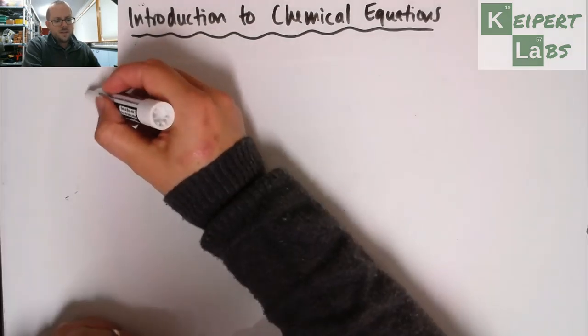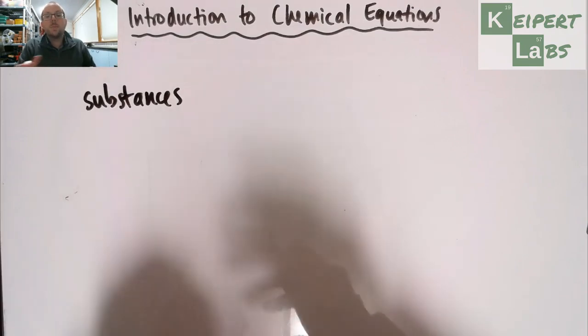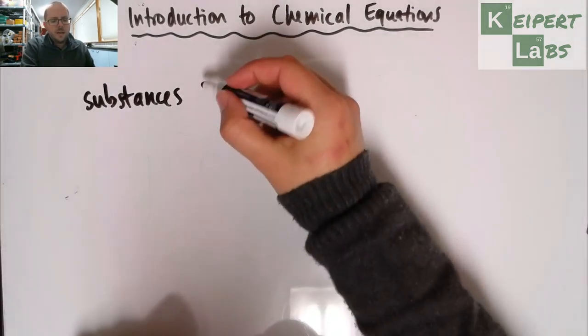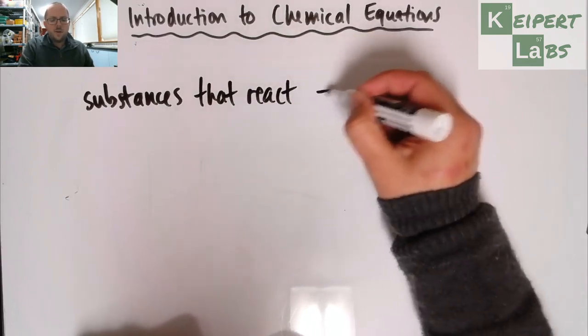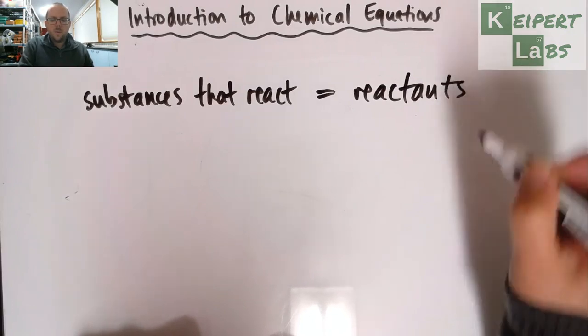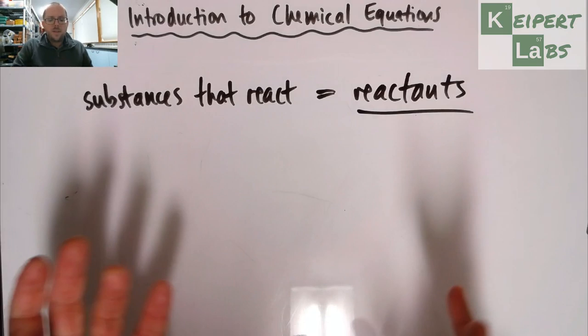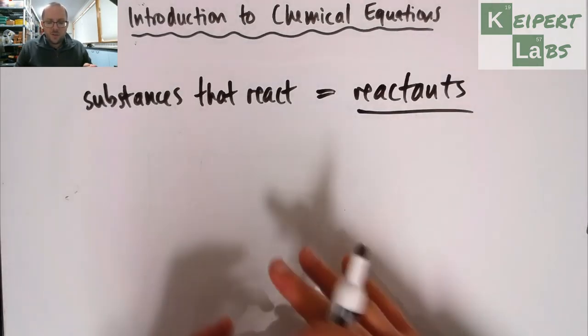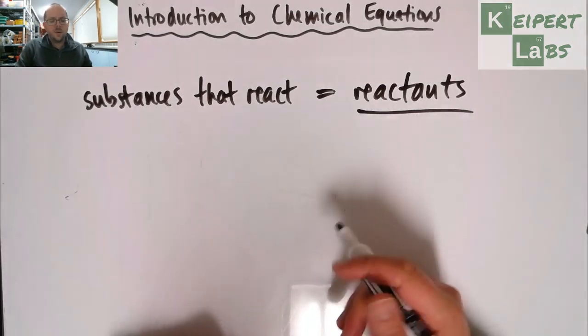The first thing is that the substances... We give a name to the different substances that we would be writing in a chemical equation. So the substances that react together are known as reactants. Now there could be one reactant, there could be five reactants, or more or less. But if they are the substances that are coming together to react together to make the change, they are considered a reactant.